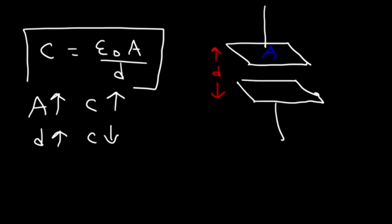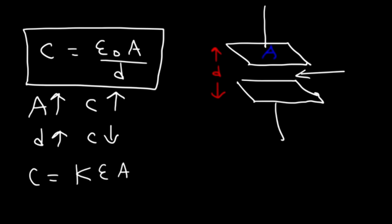Now sometimes you can add an insulator. The insulator doesn't have to be air, and if you add an insulator — also known as a dielectric — the equation will change. C will be equal to K times epsilon sub-naught times A over D. K is the dielectric constant. For air, K is about 1.0006 — very close to 1. For a pure vacuum, K is exactly 1.